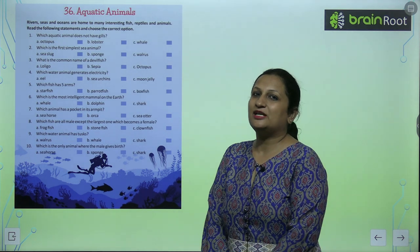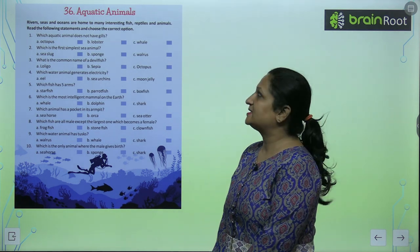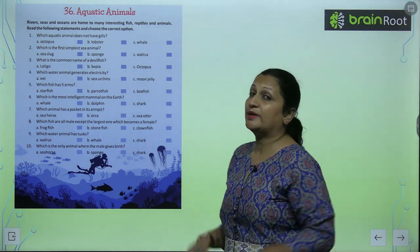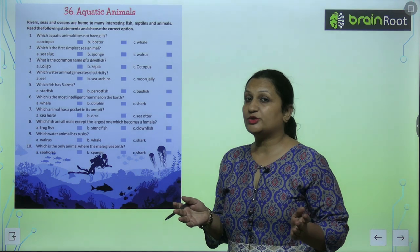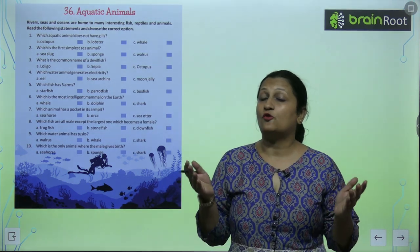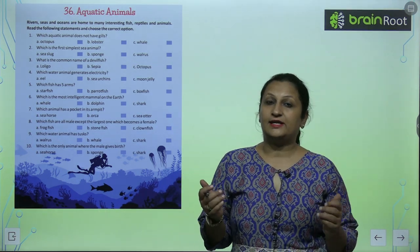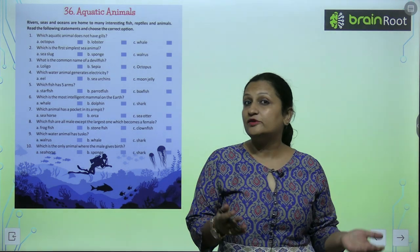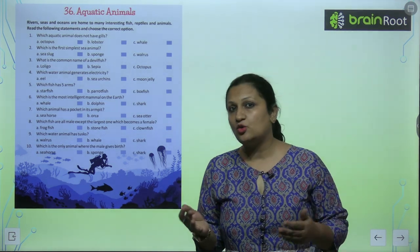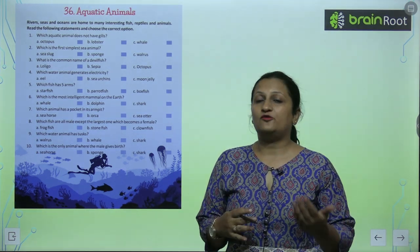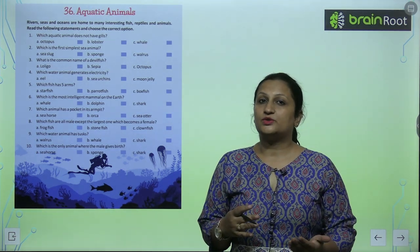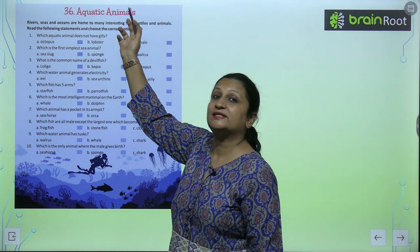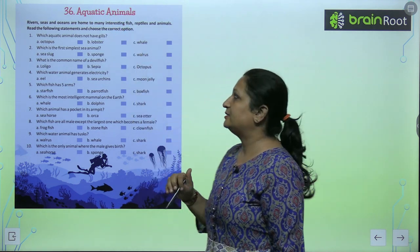Children, let's start with chapter number 36, aquatic animals. So aquatic animals kaune se hote hain? Jo water mein live karte hain. Chai woh ocean ho, chai woh sea ho, river ho, lake ho. Jo bhi water animals hote hain, unko hum bolte hain aquatic animals.